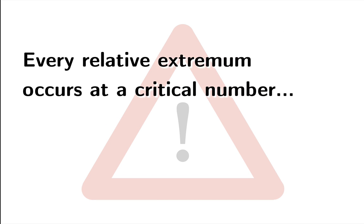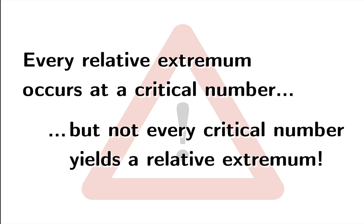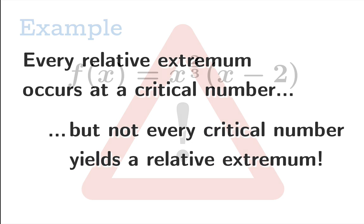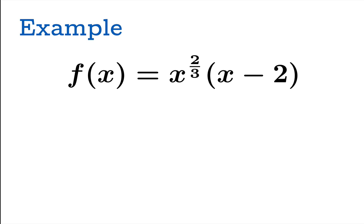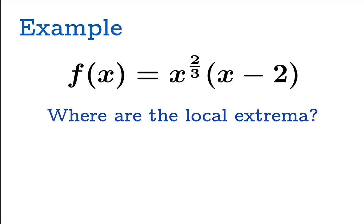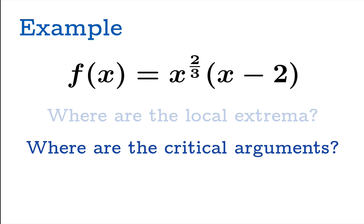What have we learned? Every relative extremum occurs at a critical number, but not every critical number yields a relative extremum. Now we'll end with an example that also illustrates how to organize your algebra. Consider f(x) = x^(2/3) · (x − 2). The domain of this function is all real numbers — you can take the cube root and square it for any real x. We're going to ask: where are the local extrema? According to Fermat's theorem, we should first find the critical arguments, which gives us the candidates for local extrema.